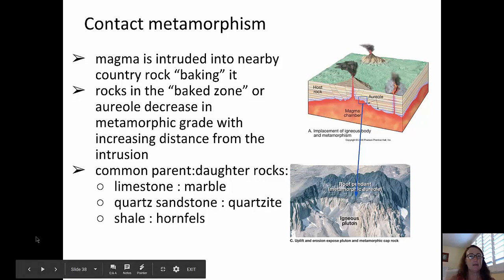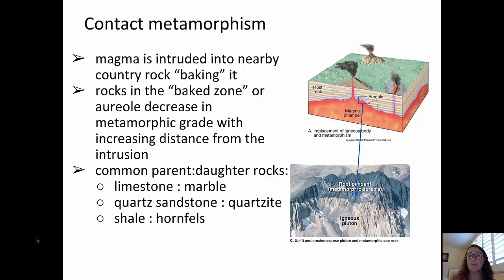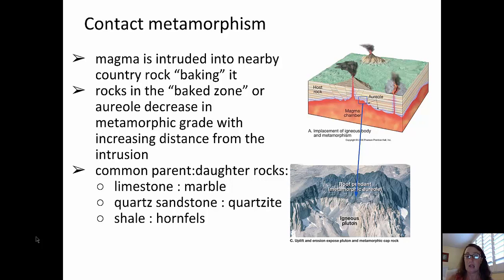Let's talk about contact metamorphism first. Contact metamorphism occurs when magma is intruded into some country rock, and it actually bakes that country rock — heating it up adjacent to where that magma is being intruded. The area that's baked is known as the baked zone or the metamorphic aureole. Within that metamorphic aureole, the metamorphic grade decreases with distance from the magma chamber — the farther you get, the lower the metamorphic grade.